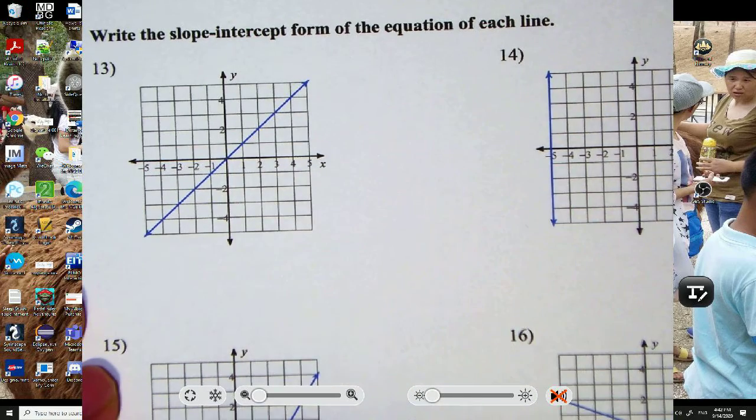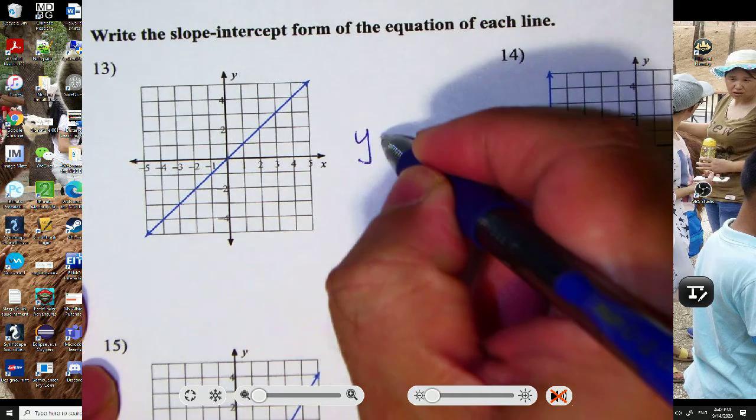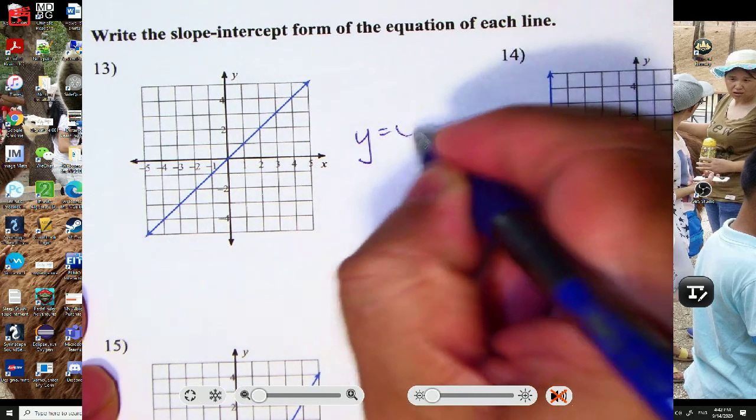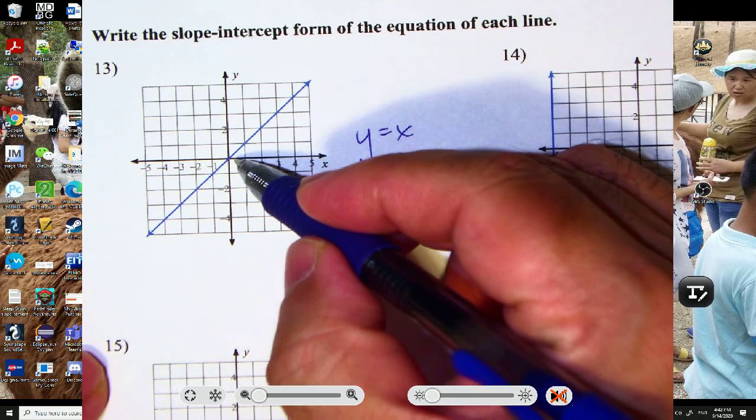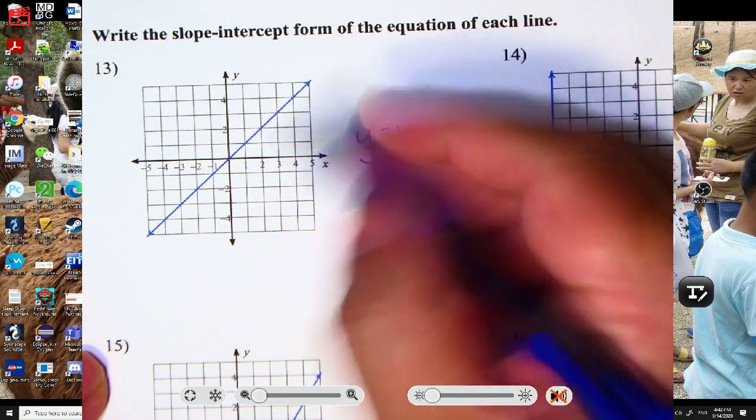So this one is y equals x. I guess I would have given you the answer. So what is the y-intercept in this problem? Or what is a point? So 0, 0 is a point.